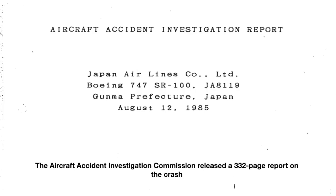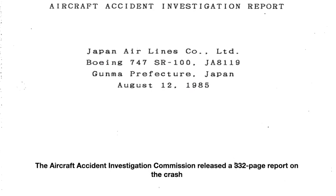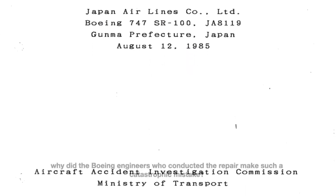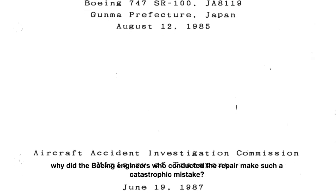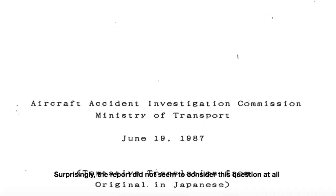The Aircraft Accident Investigation Commission released a 332-page report on the crash but it did not address a crucial issue. Why did the Boeing engineers who conducted the repair make such a catastrophic mistake? Surprisingly, the report did not seem to consider this question at all.